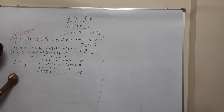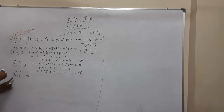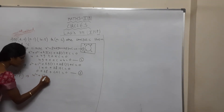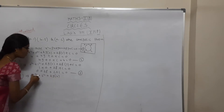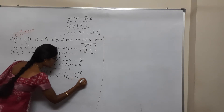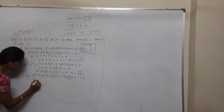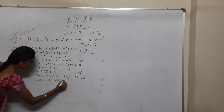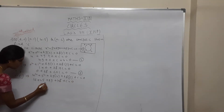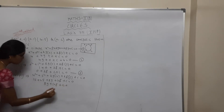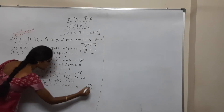For point (4,5): 4² + 5² + 2G(4) + 2F(5) + C = 0, giving 16 + 25 + 8G + 10F + C = 0. Written in order: 8G + 10F + C + 41 = 0. Consider this as Equation 4.